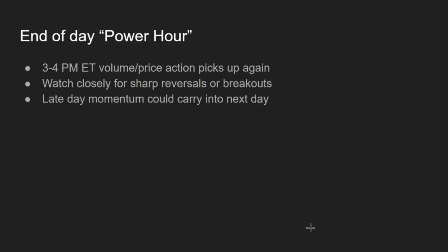Power hour runs from 3 to 4 PM Eastern — the last hour of the trading day — and volume and price action will start to pick up again. Day traders come back to maybe close out positions they let run throughout the day, and people are back in the market looking for swings into the following day — whether it's earnings plays coming out after hours or the following day — taking small or large positions.